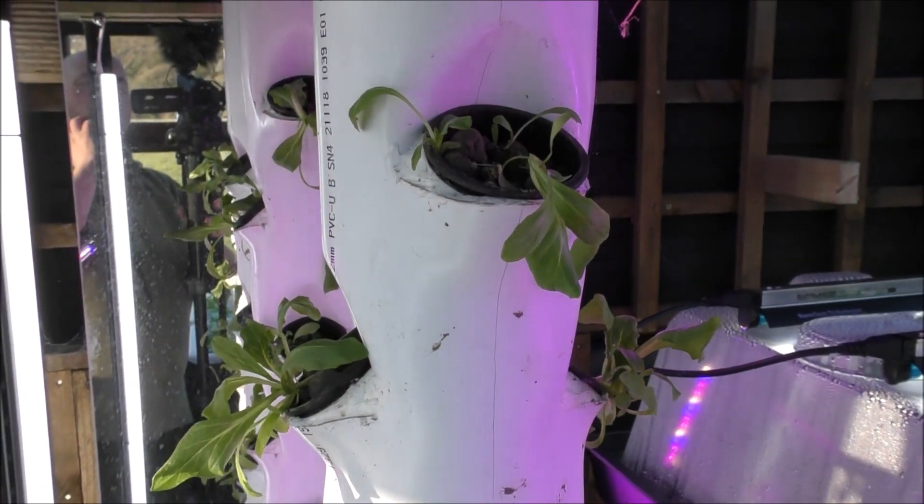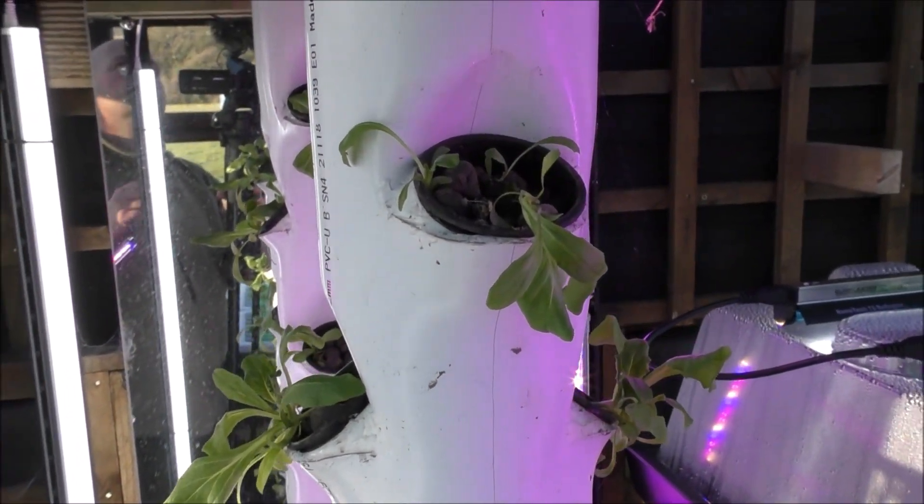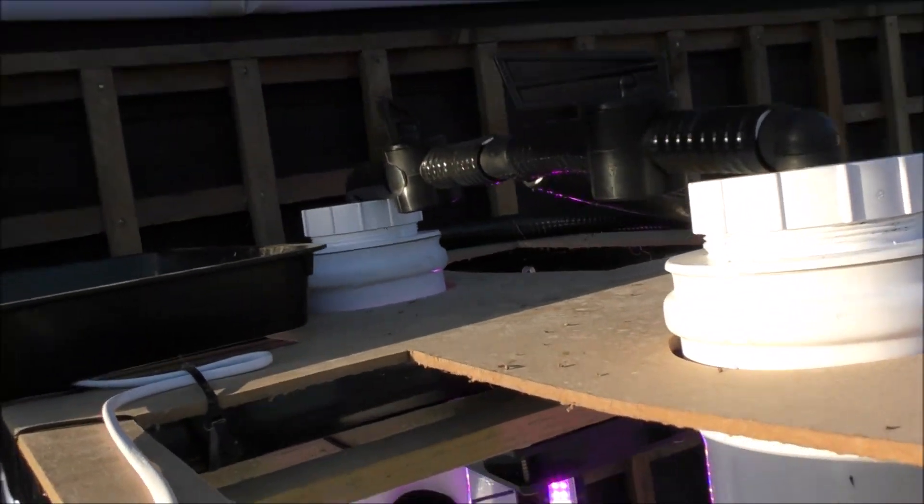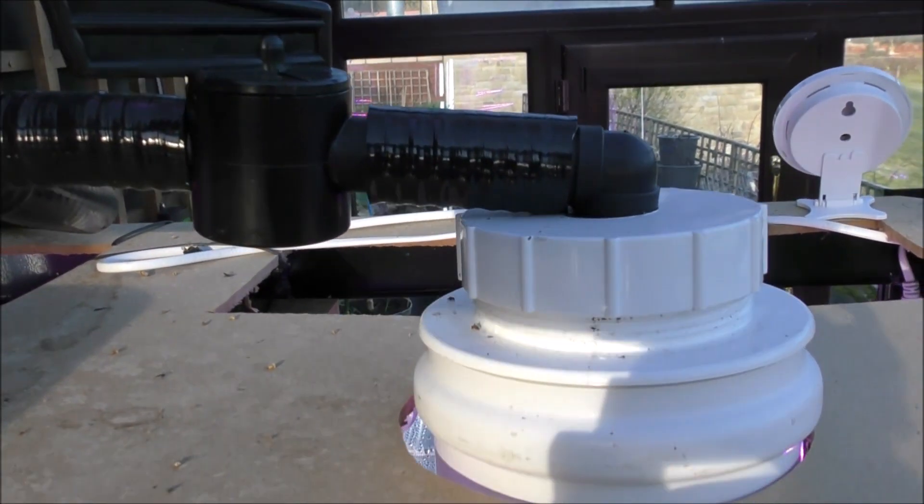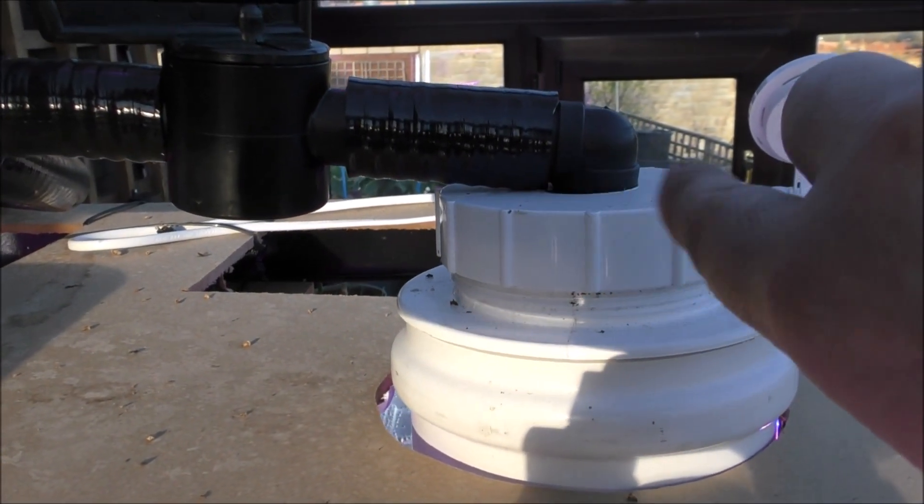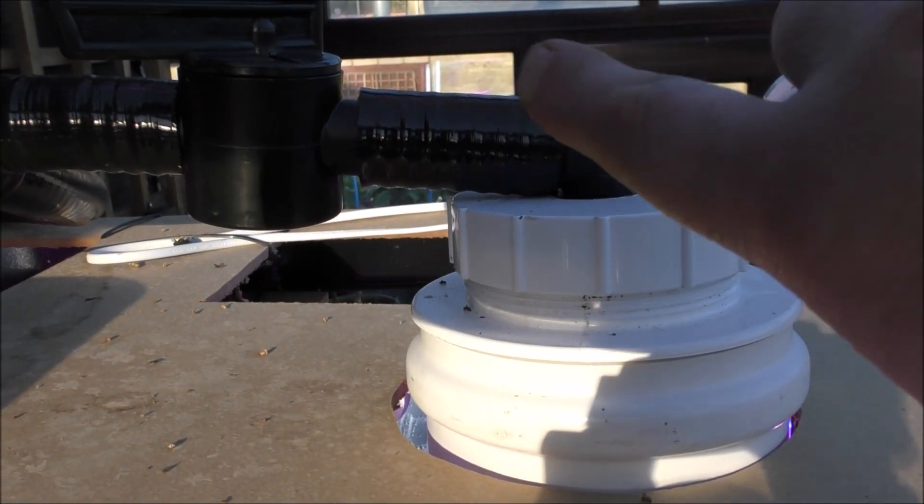In white, you can get it in black and you can also get it in orange as well. Just let you have a look up on the top there. See how the water gets in. That's just like an inspection cap type thing there with the screw thread on. I've got an elbow.